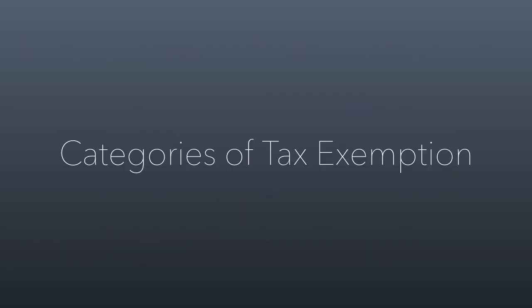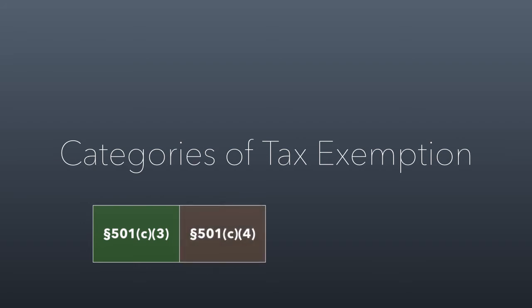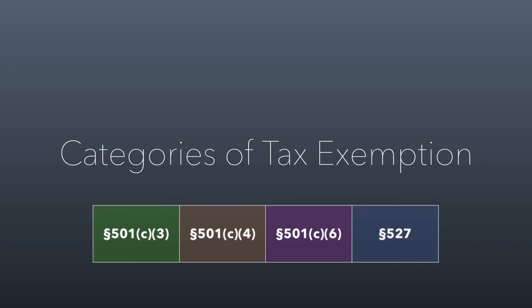Let's now talk about categories of tax-exempt status. As I told you on the first day of class, there are over 30 different categories of tax exemption. I'm not going to make you learn all 30 — most of them are very narrow and you'll never encounter them in your life. But there are four that you will encounter and that are worth knowing about: 501c3, 501c4, 501c6, and then we step outside of the 501c code section to Section 527. So 501c status is based on Section 501c of the federal tax code, and there are around 28 to 30 different categories of tax-exempt status under that section.